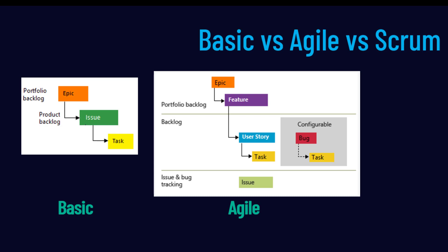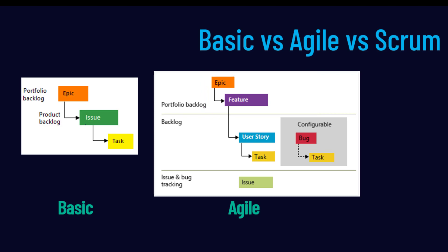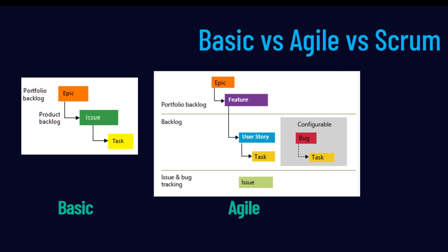Next is the agile process type, where the entire process is divided into three different categories. At the top you have epic and feature, which help define your portfolio or project backlog and overall vision for the agile project or sprint iteration. Then at a more detailed level you create user stories and underneath tasks to complete those user stories, and if there are any issues you can create an issue related to the user story.